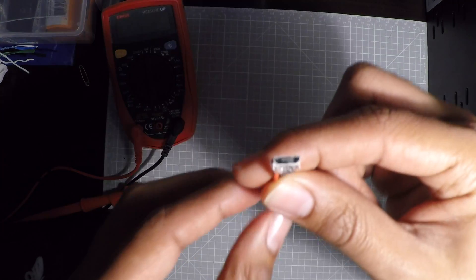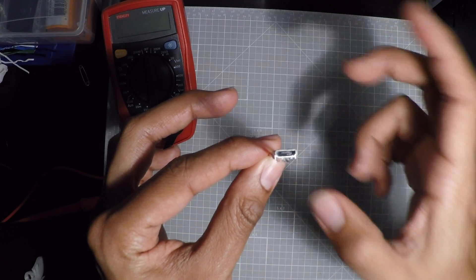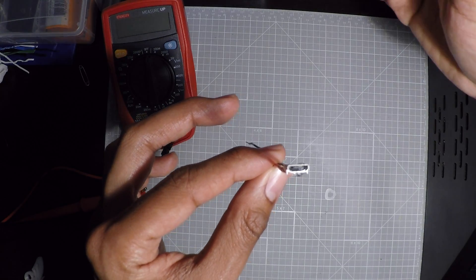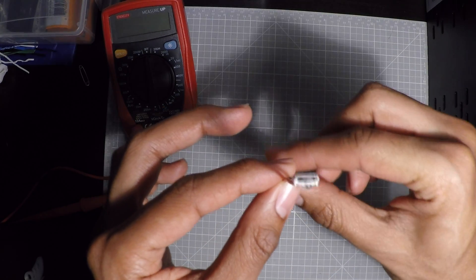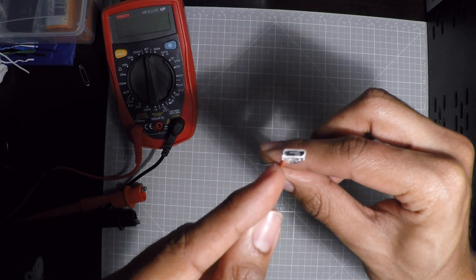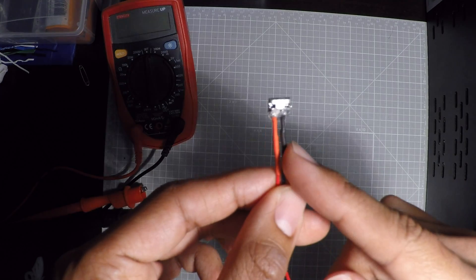To find out which end is what, when you look at it, it has a trapezoid shape. The long end is on top and the short end is on the bottom. When you align it like that, the left side has the 5 volts and the right side has the ground.